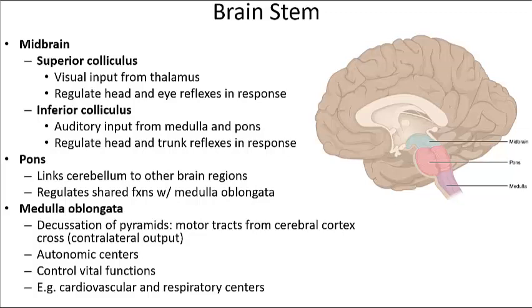The medulla oblongata also contains major centers for regulating important autonomic functions. It controls the force and rate of heart contractions, regulates blood pressure by controlling smooth muscle of blood vessels through vasoconstriction or vasodilation, helps regulate the depth and rate of breathing, and regulates visceral reflexes such as vomiting, hiccuping, swallowing, and sneezing.